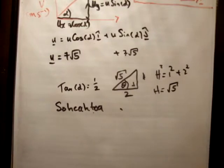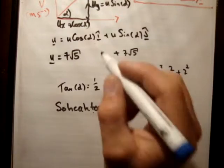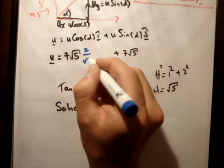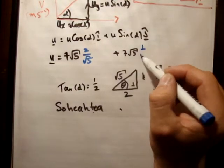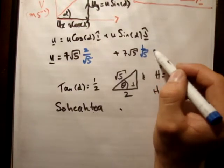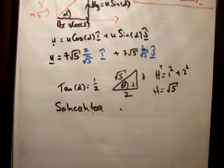So what that means is that cos alpha, or cos theta, or whatever it is you want to call it, is equal to 2 over √5. And sin alpha is equal to 1 over √5. Like so.